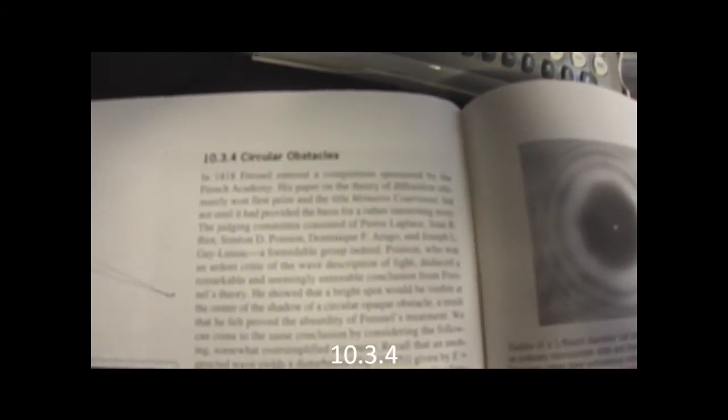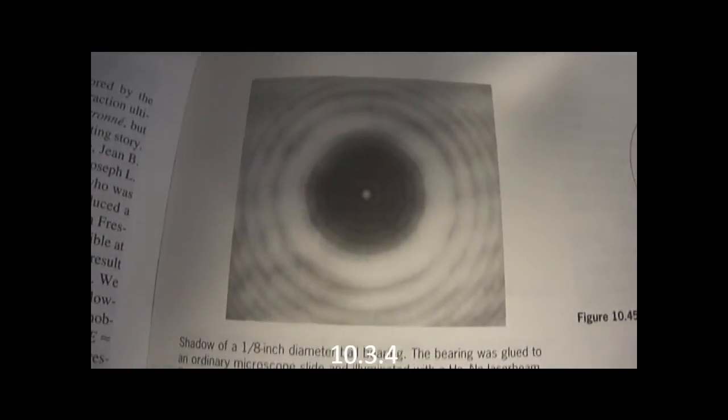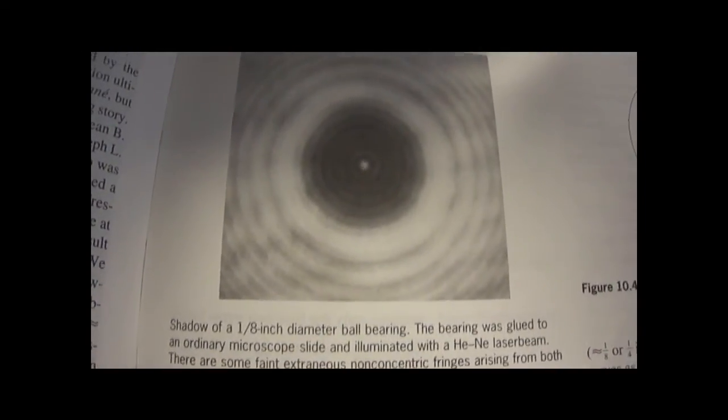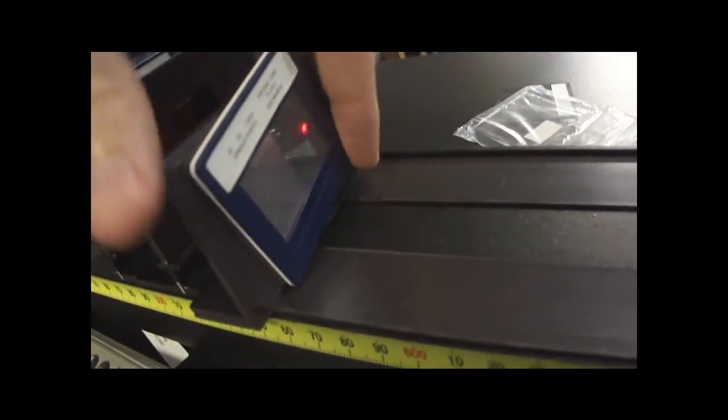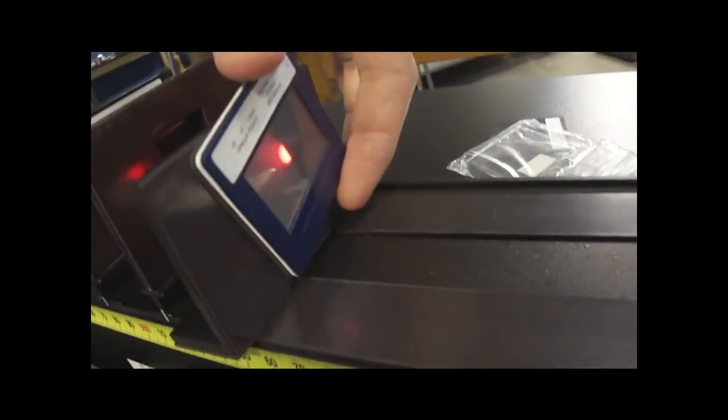One thing I forgot in my demo was the circular obstacles. Here you should see something like this out of a circular obstacle, which is the other part of the Fresnel zone plate, which is not described in the demo instruction booklet. With that, you can see a pattern basically like this.